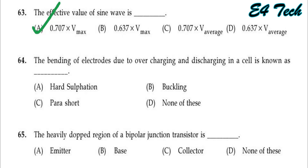The bending of electrodes due to overcharging and discharging in a cell is known as buckling. Option B.